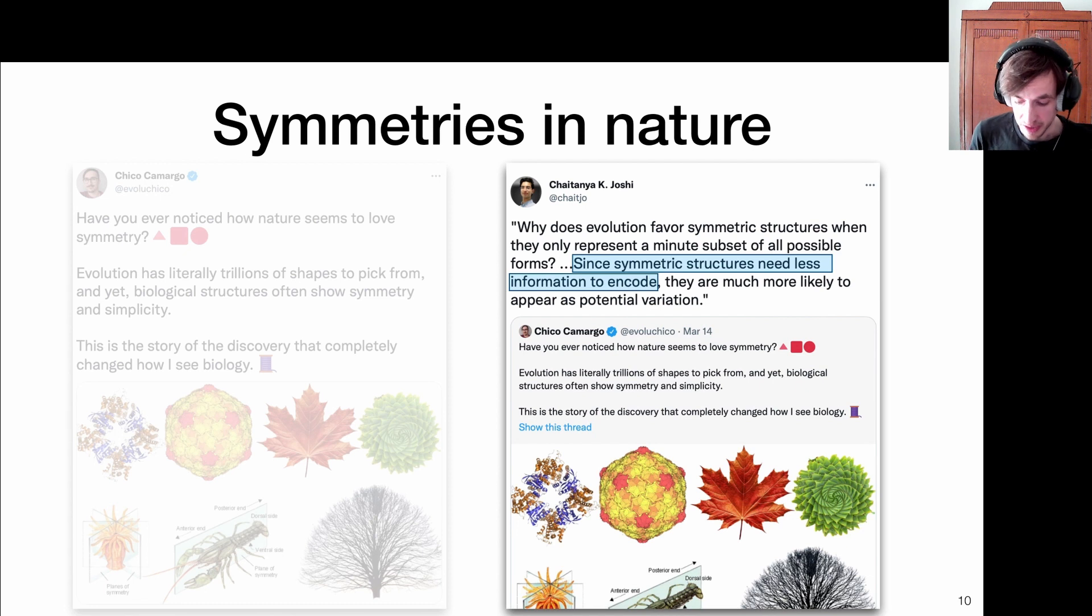I think this one by Chaitanya Yoshi nicely summarizes it with a quote coming from the paper discussed in this thread, stating, why does evolution favor symmetric structures when they only represent a minute subset of all possible forms? And the answer then is that since symmetric structures need less information to encode, they are much more likely to appear as a potential variation. So symmetry is like a major tool in nature to be more efficient in representation learning or information processing, because I do not necessarily need to know how to manage this entire plant from beginning to end, if I am able to locally encode what needs to be done to maintain life in this particular life form.